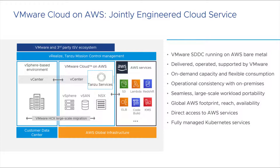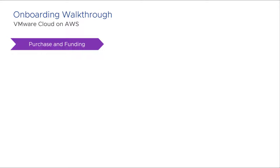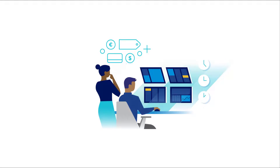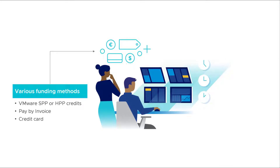As customers migrate workloads into VMware Cloud on AWS, they can progress their app modernization journey by using the Tanzu services included with VMware Cloud on AWS. The first step of onboarding is purchasing the VMware Cloud on AWS service, so let's look into the purchase options.